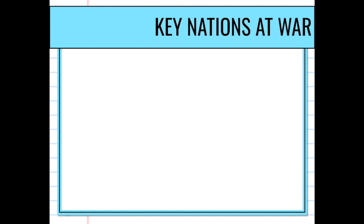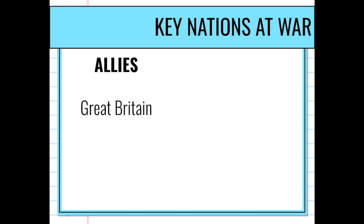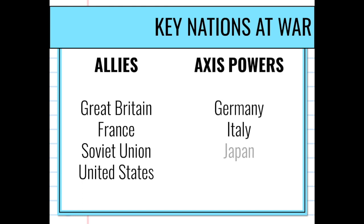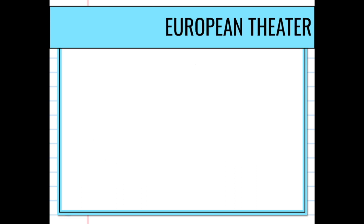With the US officially in the war and isolationism over, we have our key nations: the Allies — Great Britain, France, the Soviet Union, and the United States — versus the Axis Powers of Germany, Italy, and Japan. Other nations like Canada and Australia were also part of the Allies, but these are the major players.